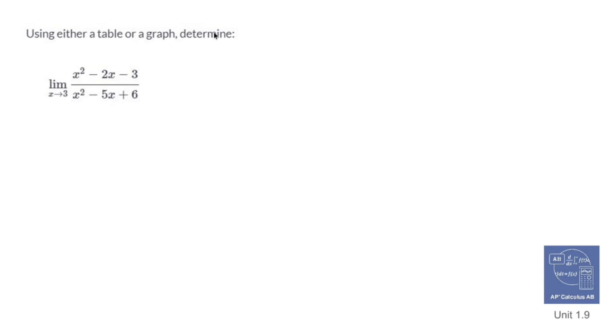Use either a table or a graph to determine the limit as x approaches 3 of x squared minus 2x minus 3 over x squared minus 5x plus 6.